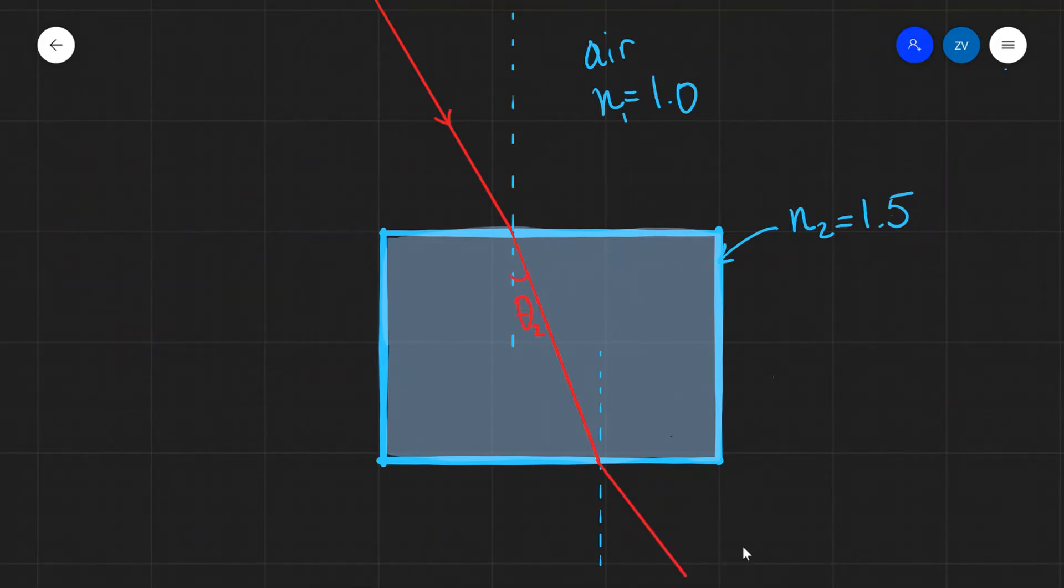Now, how can we find this angle theta 2? In order to do so, let's define a couple of angles over here. I'm going to call my angle of incidence theta 1. Know that the angle of incidence is the angle between the light ray and the normal. A couple of times they might try and trick you in a question by giving you this angle over here. So the way we would find the angle of incidence in that case would be to subtract this angle from 90. But once again, the angle of incidence is the angle between the light ray and the normal.